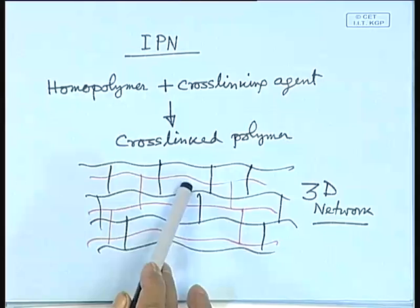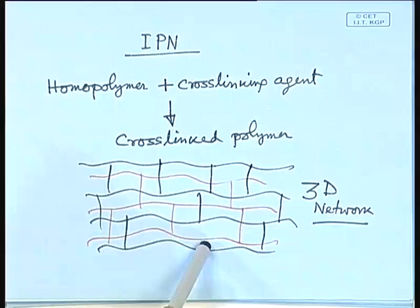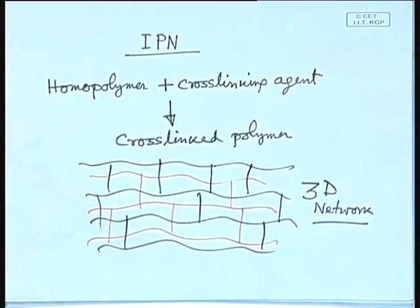That concept is what I want to convey here regarding soft contact lenses. For a soft contact lens, an amphiphilic co-network is used. Think of the black 3D network as hydrophilic and the red network as hydrophobic — such a network is called an amphiphilic network. This is necessary because oxygen is hydrophobic, so the permeability of oxygen and other properties require a balance of hydrophilic and hydrophobic character.